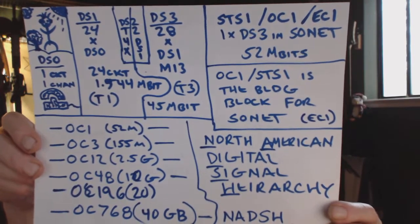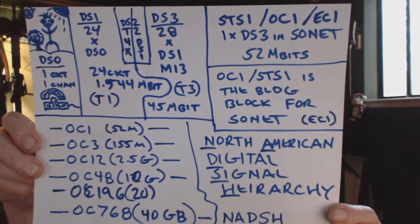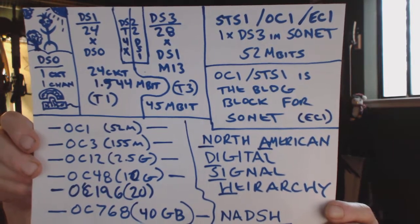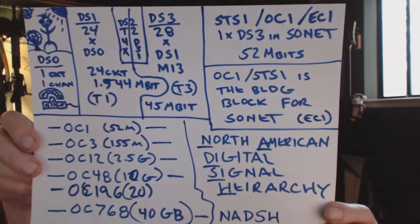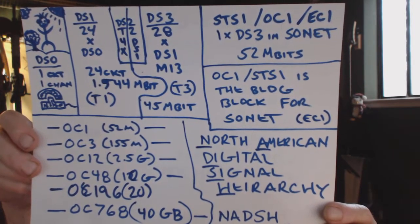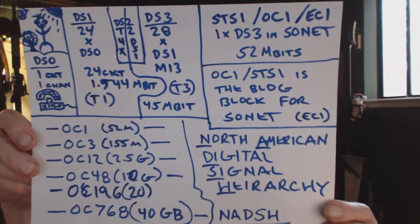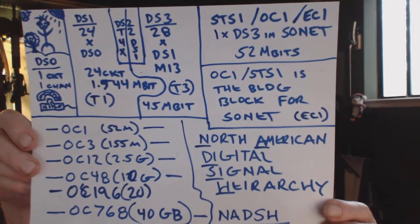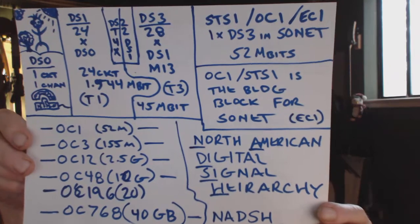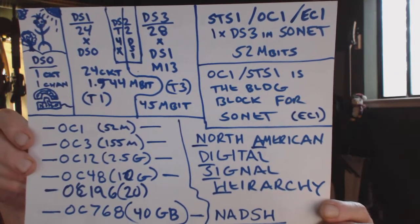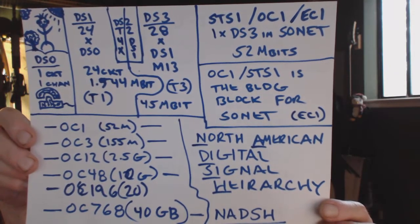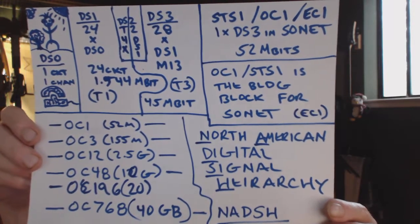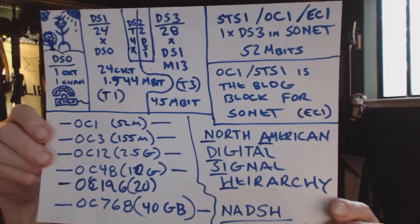We have a DS0 at 64 kilobits. We have a DS1: 24 by 64 kilobits or 1.544 megabits. We then have 1.544 megabits times 28 for DS3, or 45 megabits, which is 672 channels — you can think of 672 channels as a basic building block.